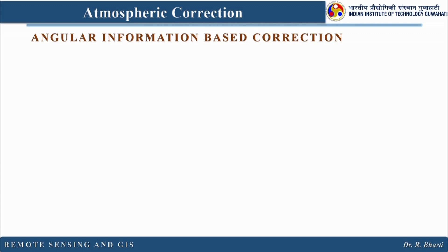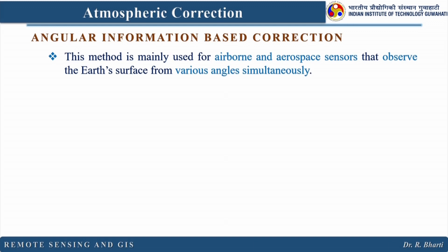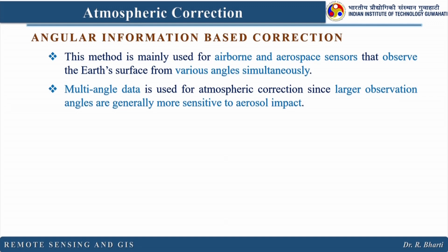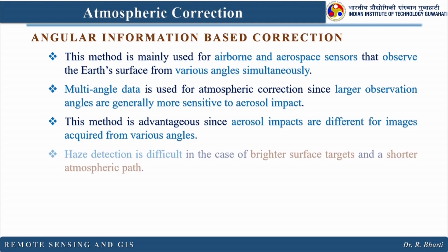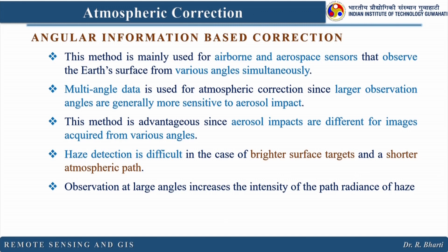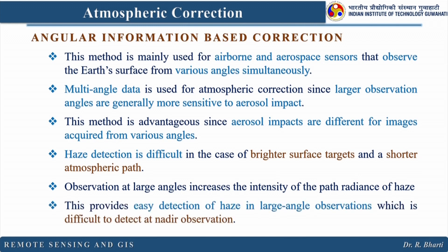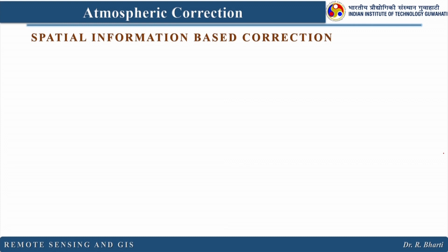Angular information-based correction is mainly used for airborne and aerospace sensors that observe the earth's surface from various angles simultaneously. Multi-angle data is used for atmospheric correction since large observation angles are generally more sensitive to aerosol impacts. Haze detection is difficult for brighter surface targets and shorter atmospheric paths, but observation at large angles increases the intensity of path radiance from haze, providing easier detection of haze compared to nadir observation.